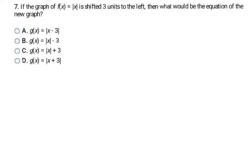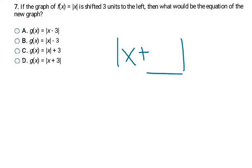This last question is still an absolute value graph, but worded differently: if the parent graph is shifted 3 units to the left, what is the equation of the new graph? Inside the absolute value is where we get left and right shifts. To shift left, it's going to be a plus — remember, it works a little backwards. We want 3 units, so it's a plus 3 inside the absolute value. My answer is D. Make sure you study your notes, and I'm sure you'll do great on these questions in Study Island and on the EOI. I'm glad you were here and I hope you learned something!